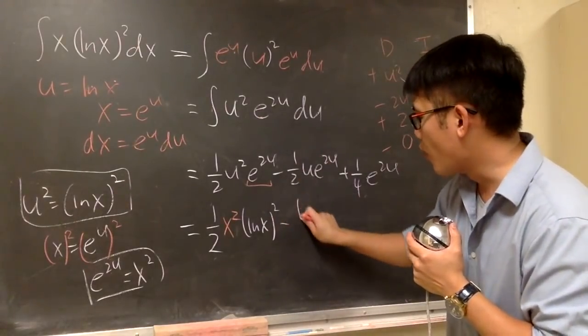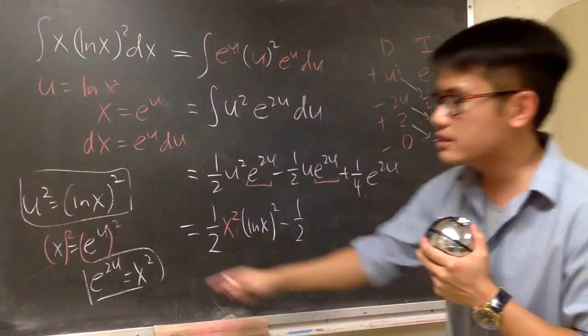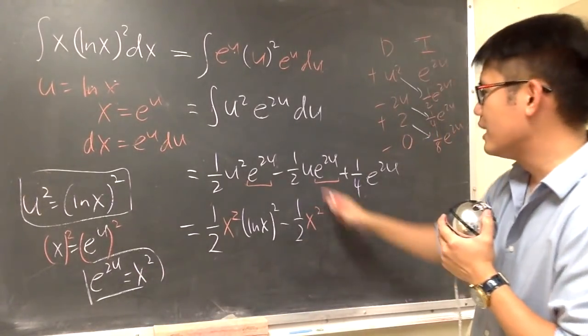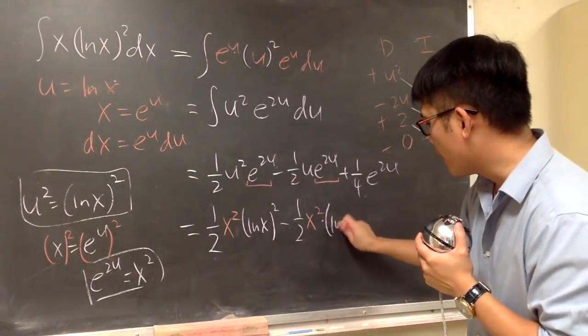And then for the next part, we have minus 1 half. And you know the deal. e to the 2u is x squared. So let's put that down. x squared first, of course. And then for the u, you know it's just ln x. So that's multiplied by ln x.